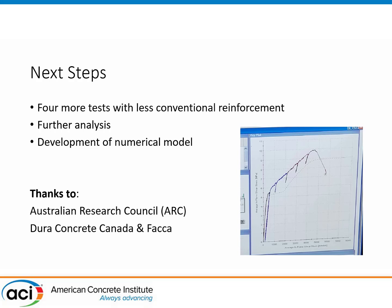We're going to do further analysis of the test and develop a numerical model. The last data point on the graph corresponds to what was shown on the computer screen during the test. The dashed line — barely visible — was the prediction made before the experiment. We like to predict behavior before the test and then plot the actual result on top. What we learned is that the variable engagement model from Steve Foster was actually conservative but pretty good. It predicted a plateau before post-cracking behavior, but that's not what we saw — we went right to post-cracking behavior, and we can see opportunity to improve. I'd like to thank the Australian Research Council for funding, and Dura Concrete Canada and FACA for helping with construction. Thank you very much.